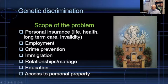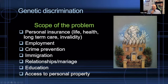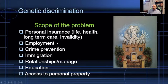Talking a bit more to the scope of the problem — where do we see genetic discrimination manifest itself mostly? The first field that usually comes to the forefront when people complain is personal insurance: life insurance, health insurance (if you don't have universal health coverage), long-term care, and invalidity insurance. Employment probably comes second.